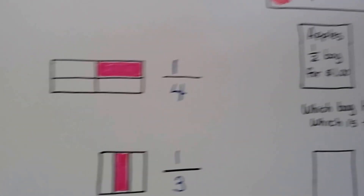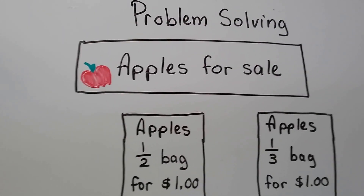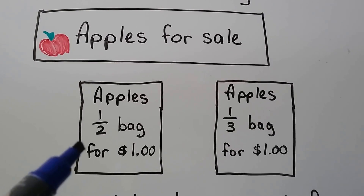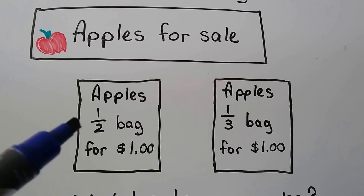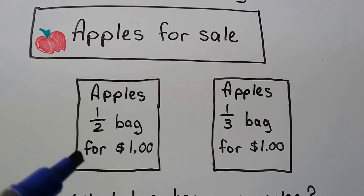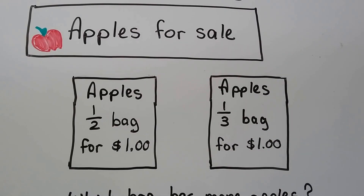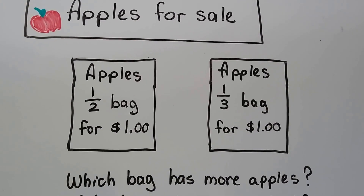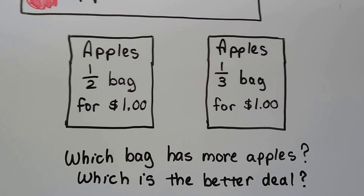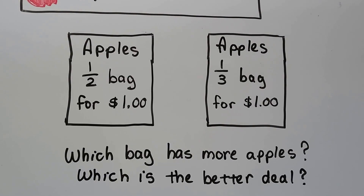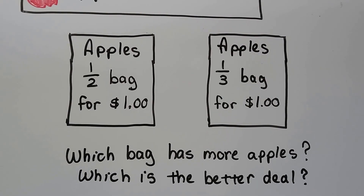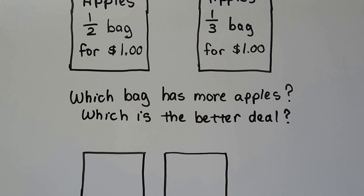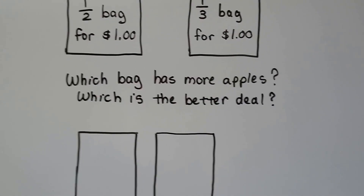Let's try some problem solving. There are some apples for sale. There are two different signs — one sign says apples: half of a bag for a dollar, and the other says one third of a bag for a dollar. So which bag has more apples? Which is the better deal? They're both a dollar, so which one gives you more apples for your dollar? There are two choices: a half bag or a third bag.